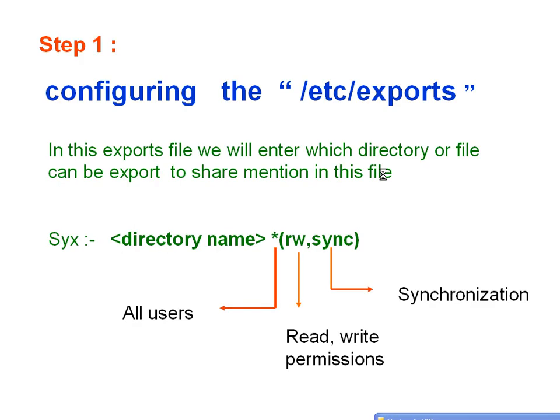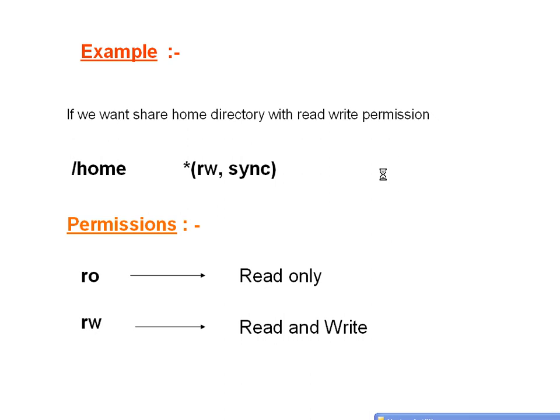Now let us have a detailed look at /etc/exports. In this exports file we will enter which directory or file can be exported to share. The syntax is: directory name, space, star — where star indicates permissions given to all users — then rw (read-write permissions) and sync, which is used for synchronization. For example, to share the home directory with read-write permissions to all users: /home *(rw,sync). The permissions that can be given include ro for read-only and rw for read and write.